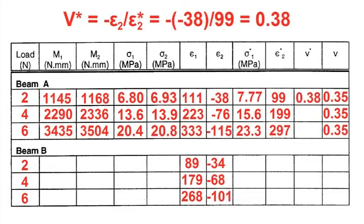The experimental Poisson's ratio is the ratio of experimental strains in the longitudinal and perpendicular directions. In our case, this is simply epsilon two divided by epsilon two star.